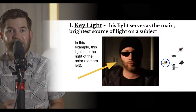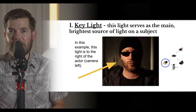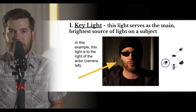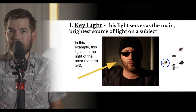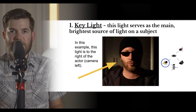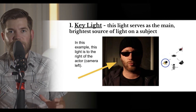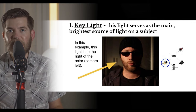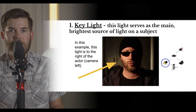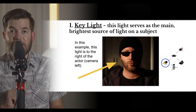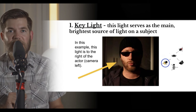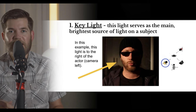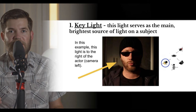In a three-point lighting setup, the first and main light is the key light — it serves as the main light and is the brightest source of light on your subject. In the example shown, the key light illuminates about half of the subject's face, leaving the other half in shadow. The key light circled in blue is a more direct light with no filter or shade in front of it.